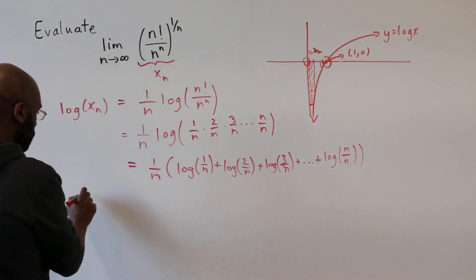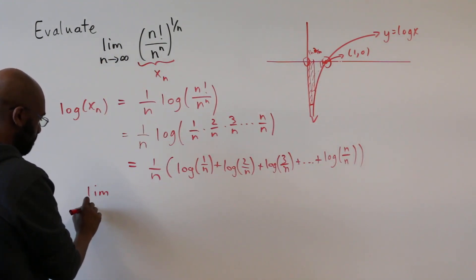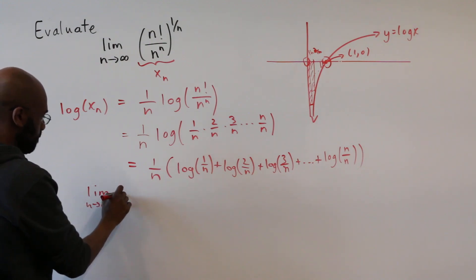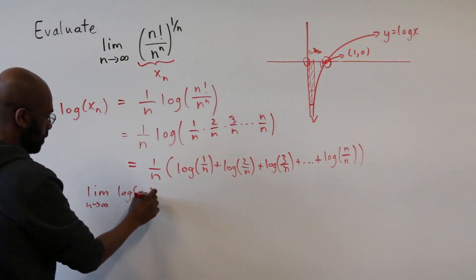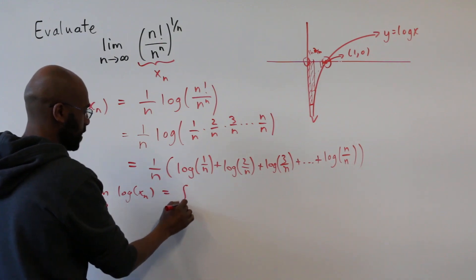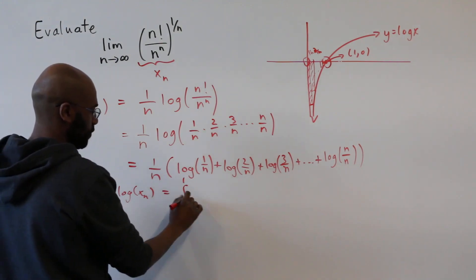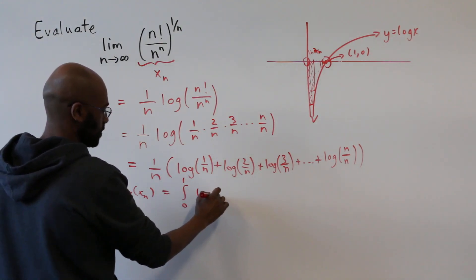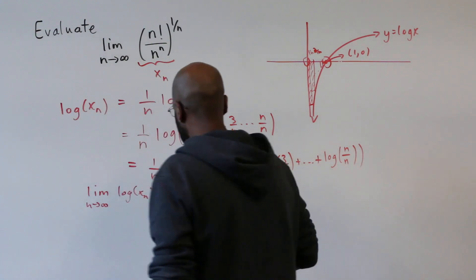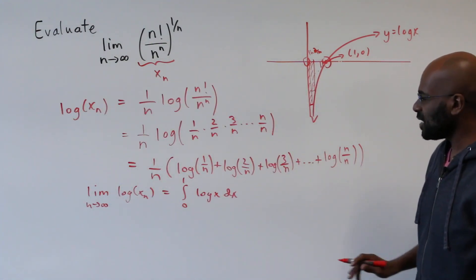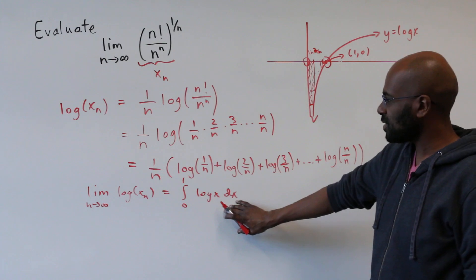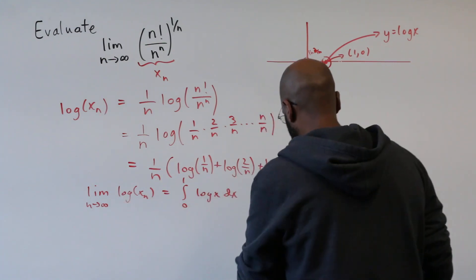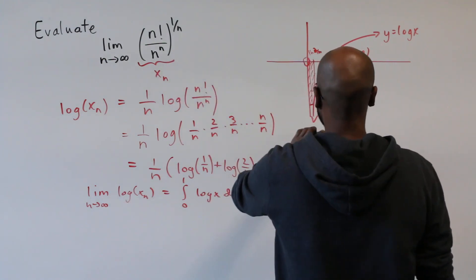So as n approaches infinity, the logarithm of these terms is going to approximate this integral, which is the integral from 0 to 1 of log x dx. Okay, so let's take some time to figure out what this integral is, in order to figure out what happens to the limit of the logarithms of the things that we're interested in.